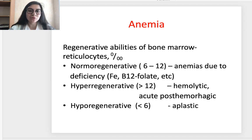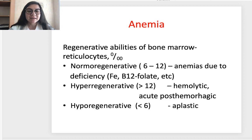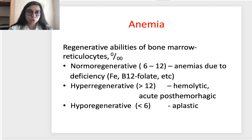According to the regenerative ability of bone marrow measured by reticulocytes, we differentiate anemias into normoregenrative, hyperregenerative, and hyporegenrative. Normoregenrative: reticulocyte level 6–12, typical for deficiency anemias such as iron, B12, or folate deficiency. Hyperregenerative: reticulocytes above 12, most typical for hemolytic or acute post-hemorrhagic anemias. Hyporegenrative: reticulocytes below 6, most typical for aplastic anemias.